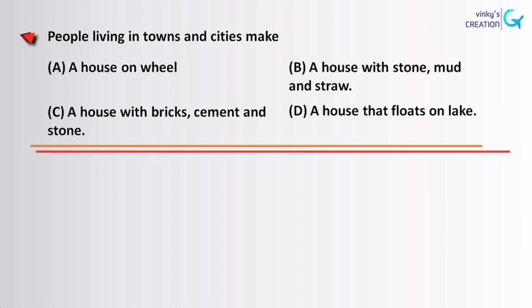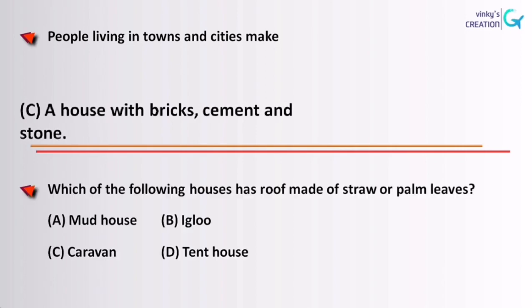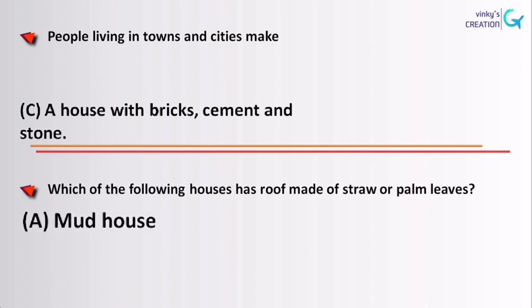People living in towns and cities make a house with bricks, cement, and stones. Which of the following house has roof made up of straw or palm leaves? Mud house.